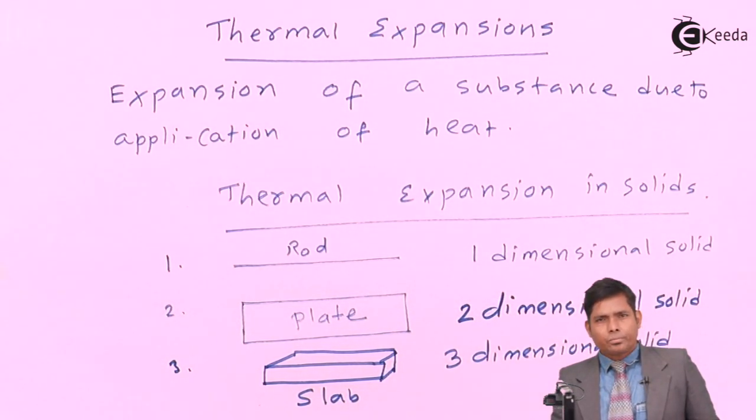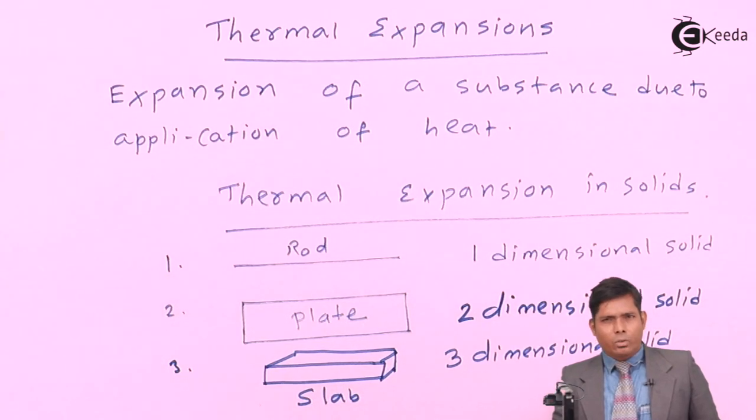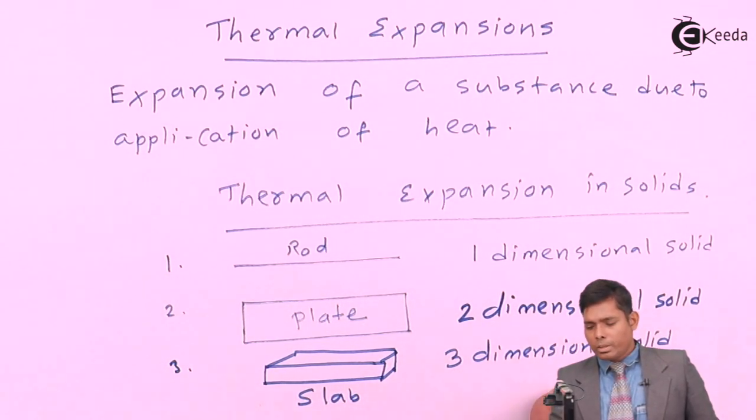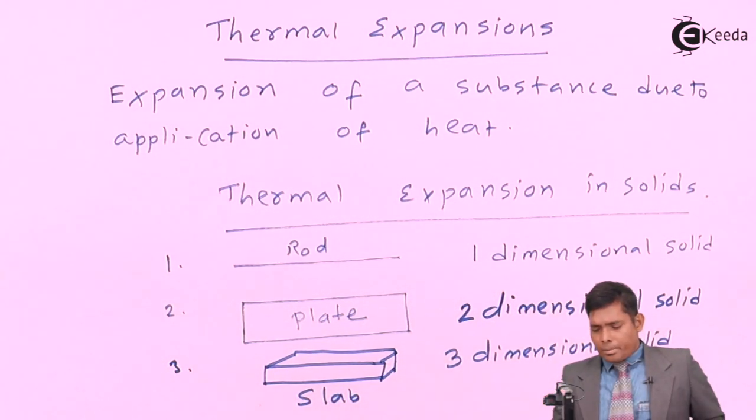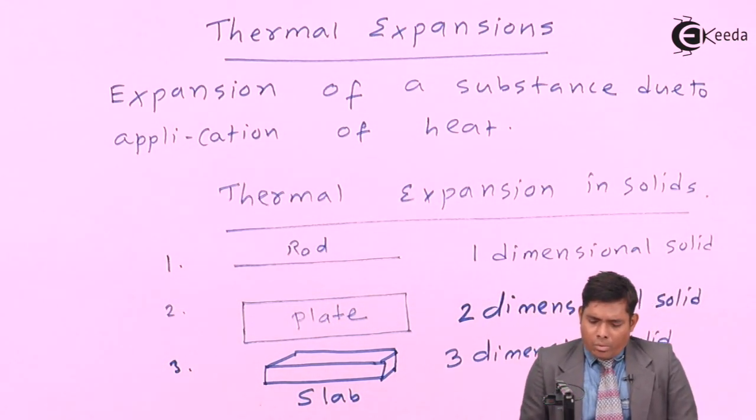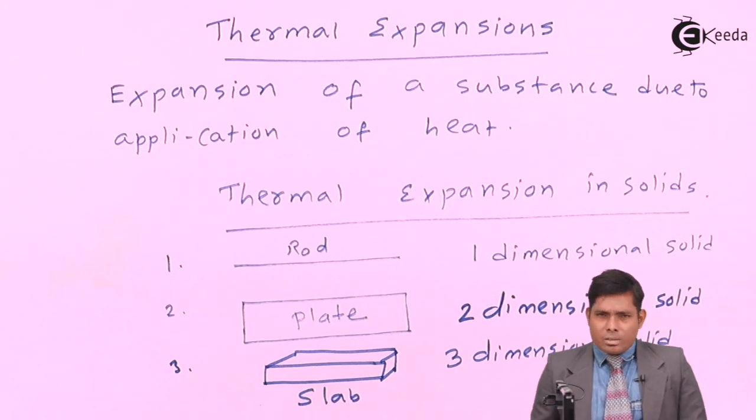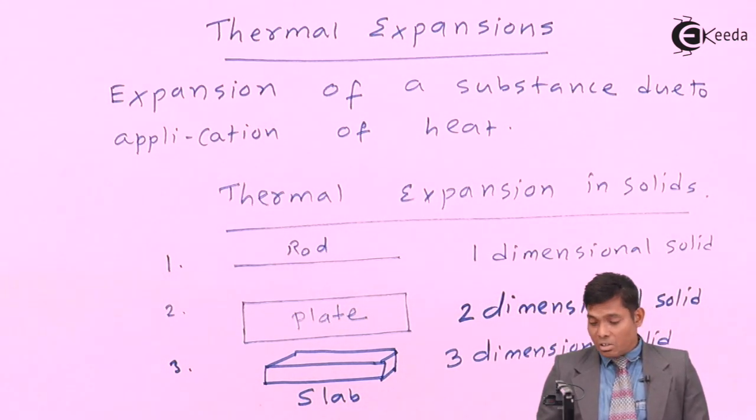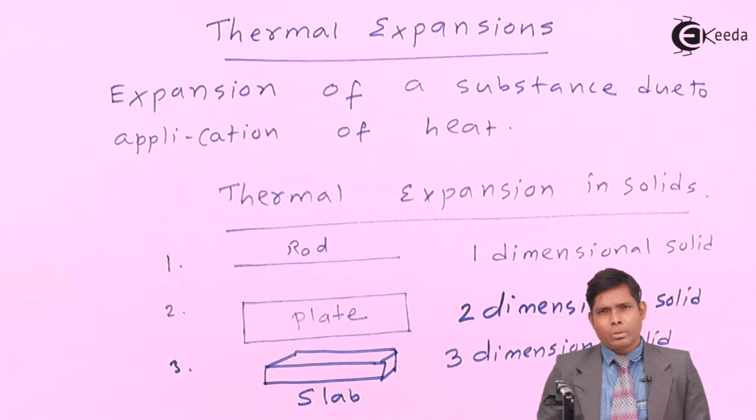But anyway, we will concentrate and focus our attention to 1D, 2D, 3D objects. In practical purpose, we neglect the lowest dimensions compared to the dominating dimensions. That is, the length is very predominant here compared to the area cross section. So, that is the reason why we categorize the solid into three types.